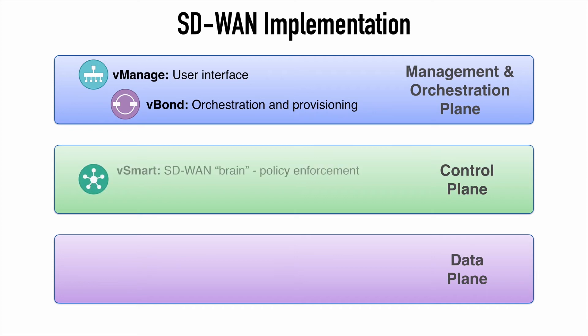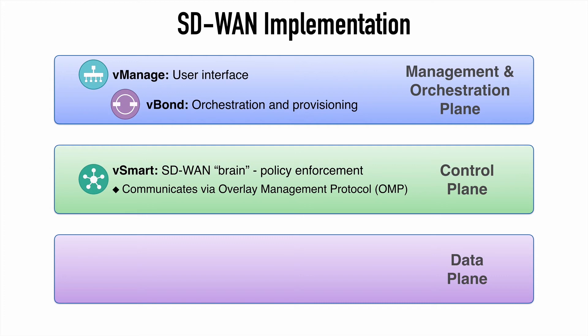Next we have Cisco's VSmart, which resides within the control plane. This is thought of as the brain of the SD-WAN solution. As an administrator creates policies in VManage, the VSmart component is responsible for the enforcement of those policies. Those policies are also shared with other SD-WAN routers and locations in our network. Route information from branch locations are received via the Overlay Management Protocol, or OMP. VSmart can use the known policies against these routes to control the traffic flow through the SD-WAN fabric.